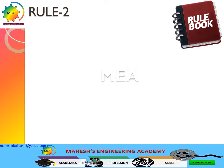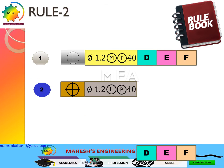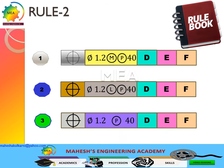Rule Number Two is related to material modifiers. When no material modifier is specified for the feature of size or for the datum, RFS (Regardless of Feature Size) applies. For example, in case one, looking at a feature control frame where the tolerance zone is specified at MMC but the datums are specified at RFS — that is Rule Number Two. In case two, the position tolerance is specified at MMC and the datums are at RFS. When no material modifier is specified, it is considered as RFS by Rule Number Two.